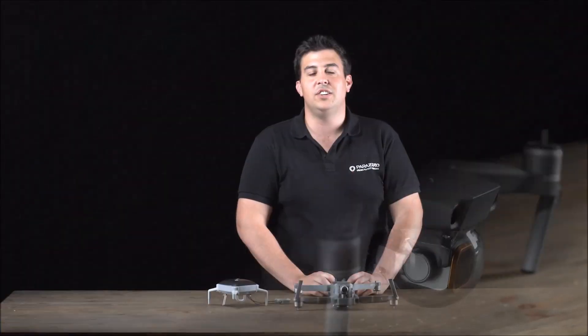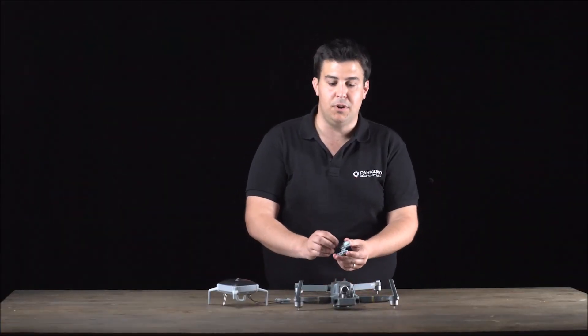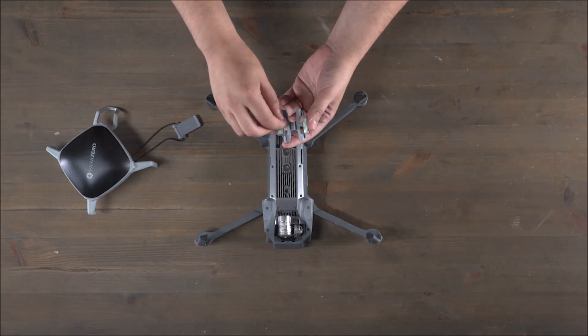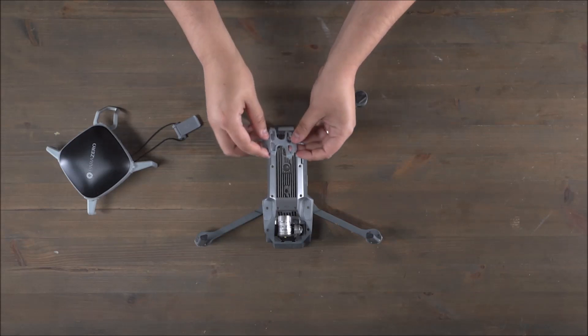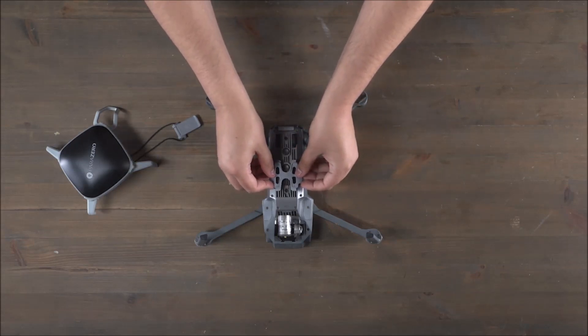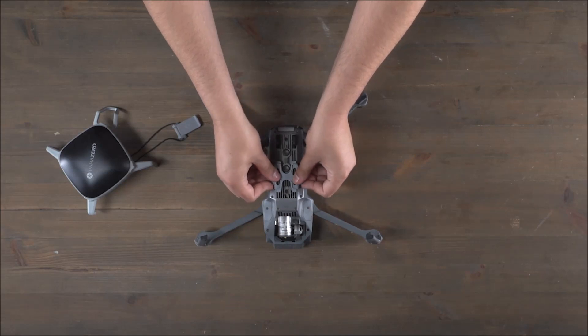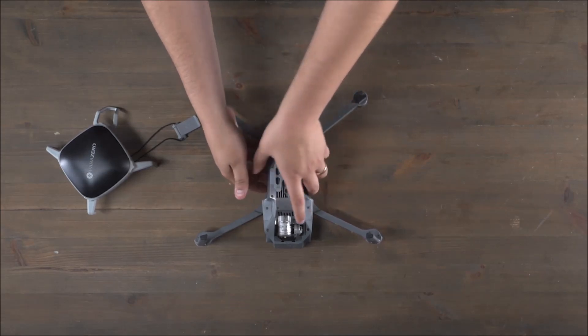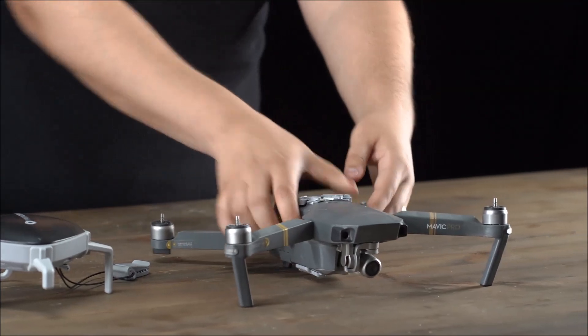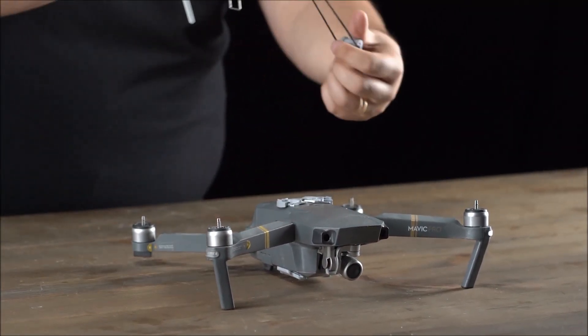When installing your SafeAir Mavic on your Mavic Pro, take the Mavic Pro adapter, remove the papers to expose the adhesive. Put it directly above the third sensor underneath your Mavic Pro. Take your SafeAir Mavic and put it on top of your Mavic Pro, like so.